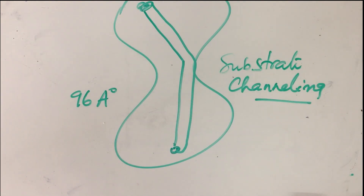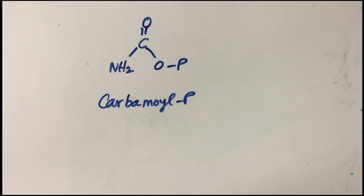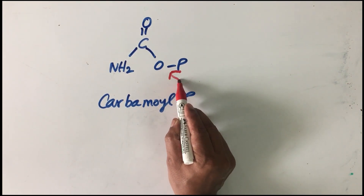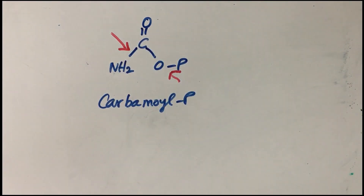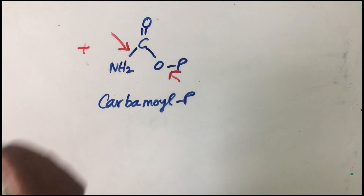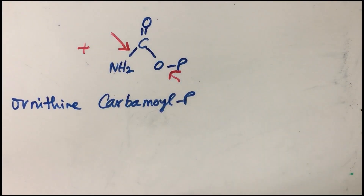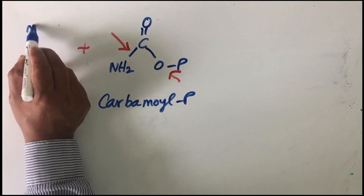Carbamoyl phosphate is needed as a precursor molecule, so it is included with the urea cycle. Formation of one mole of carbamoyl phosphate requires investment of two moles of ATP, forming two covalent bonds: an anhydride bond and an amide bond. The energy stored in this molecule will be used when it is added to the next precursor molecule — ornithine, which is an amino acid derivative, not a standard amino acid that can be incorporated into protein structure.